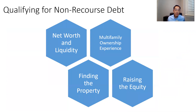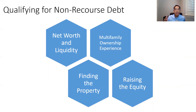So why are key principals needed? When you go out and get a Fannie/Freddie loan, your net worth and liquidity matters. Net worth needs to be equal to or greater than the loan amount, and liquidity needs to be 10% of the loan amount or greater. You also need multifamily ownership experience. If you don't have one of these things, you need to form your sponsorship team to have all of these pieces in order to qualify for the loan and buy the deal.